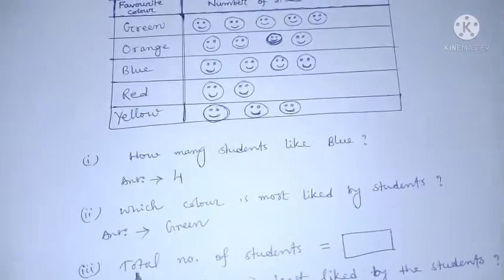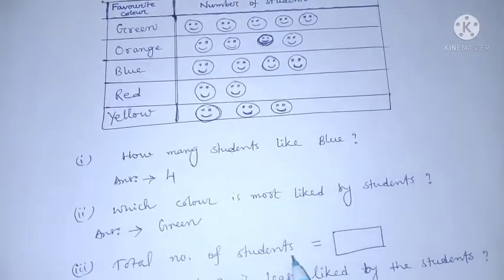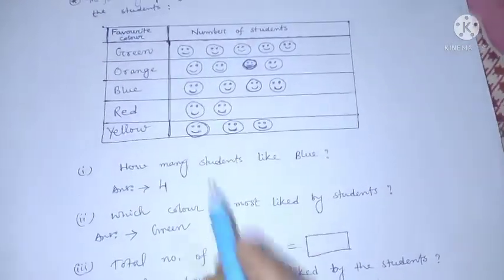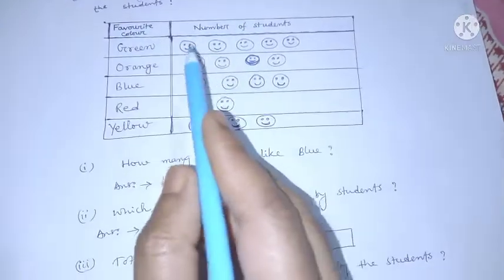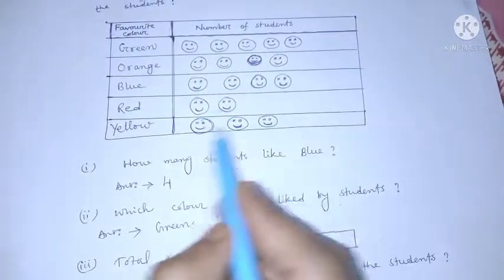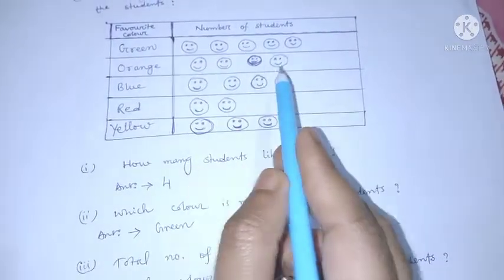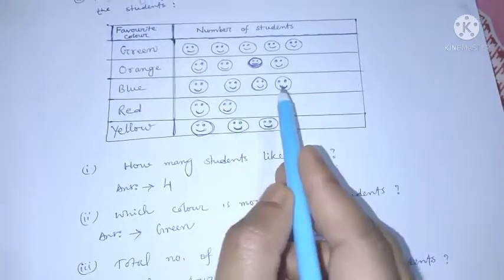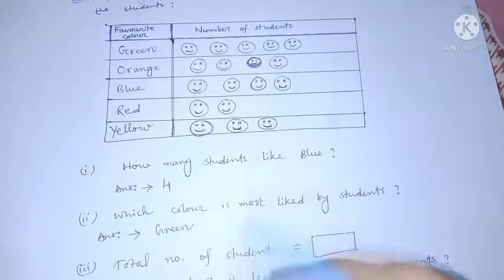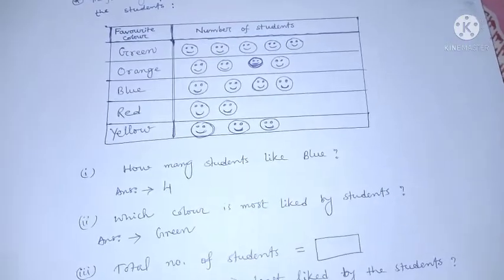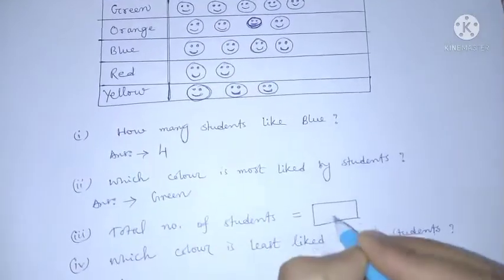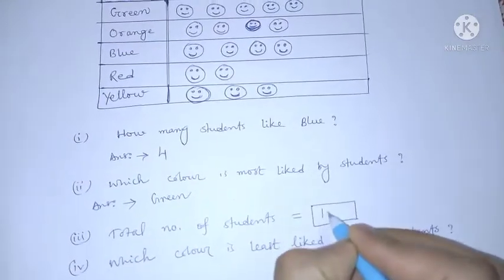Question number three: total number of students. We have to add all the students — five plus four plus four plus two plus three is equal to 18.